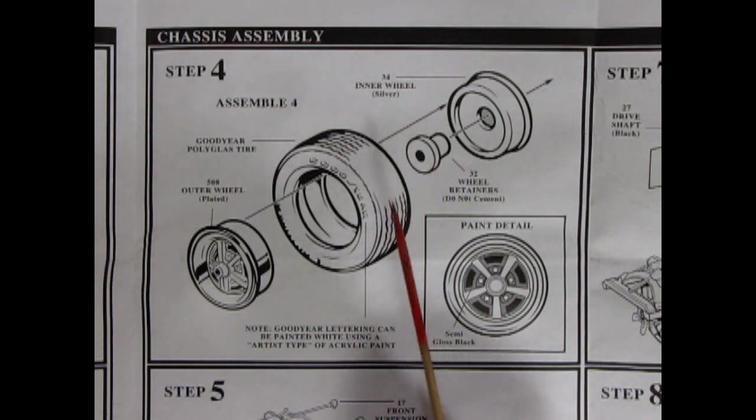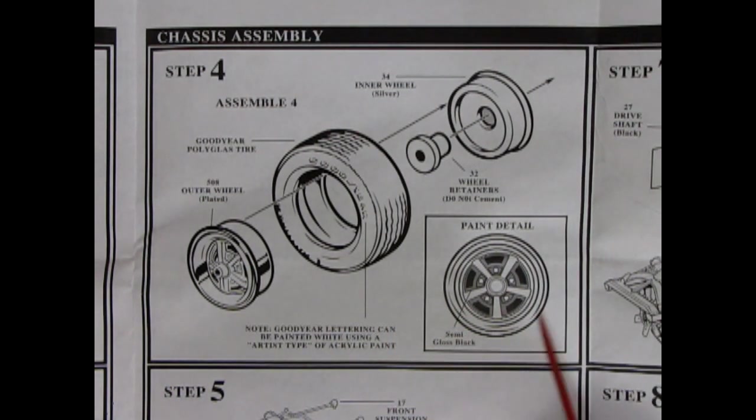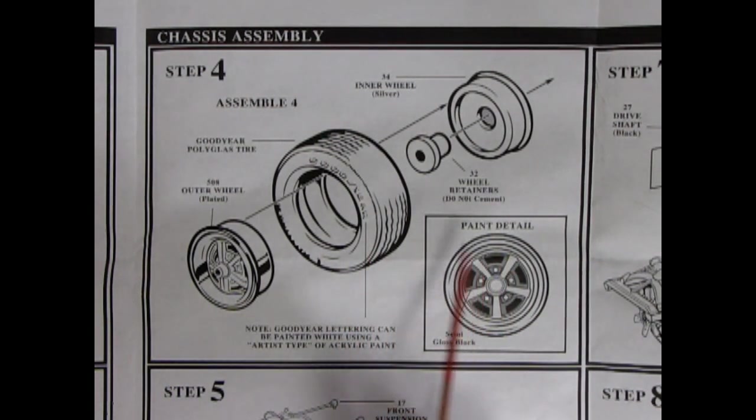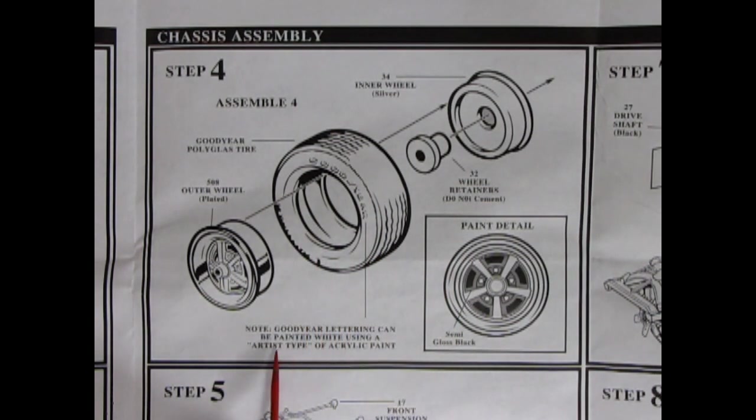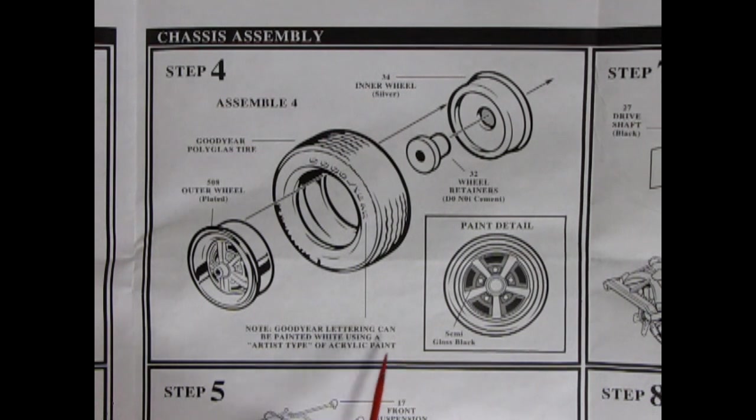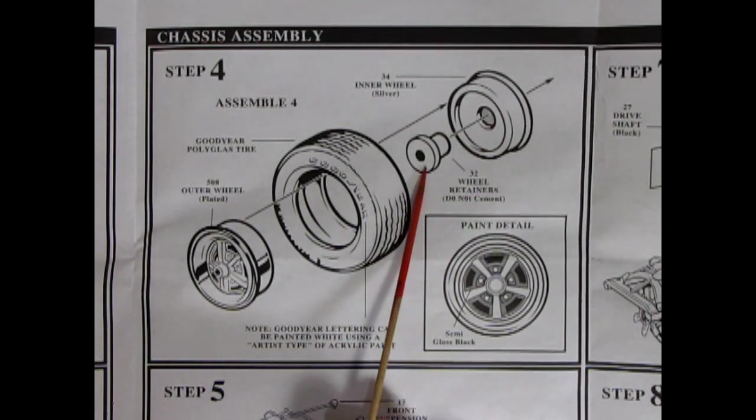Next up is our wheel and tire assembly. And again, here we have the stock wheels, which are very similar to the Magnum 500 GM wheels. Let me know what they're called in the Chrysler terminology here. There's a Goodyear polyglass tire going on there. Note Goodyear lettering can be painted white using an artist type of acrylic paint. There's our inner wheel and then our wheel retainer. It says to paint these silver, I guess to match the chrome.